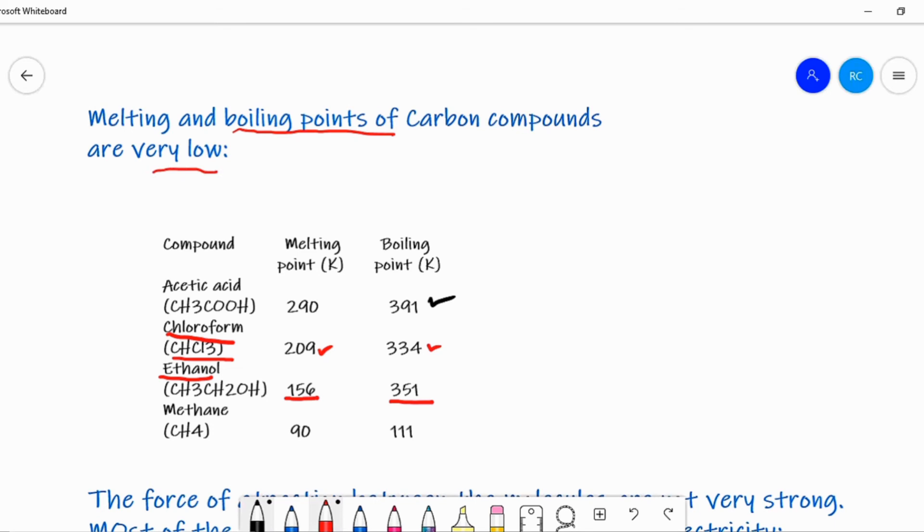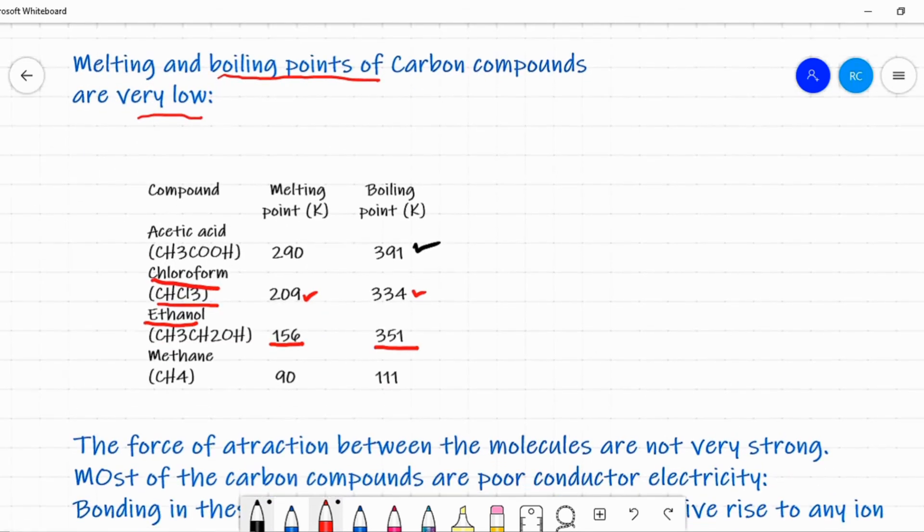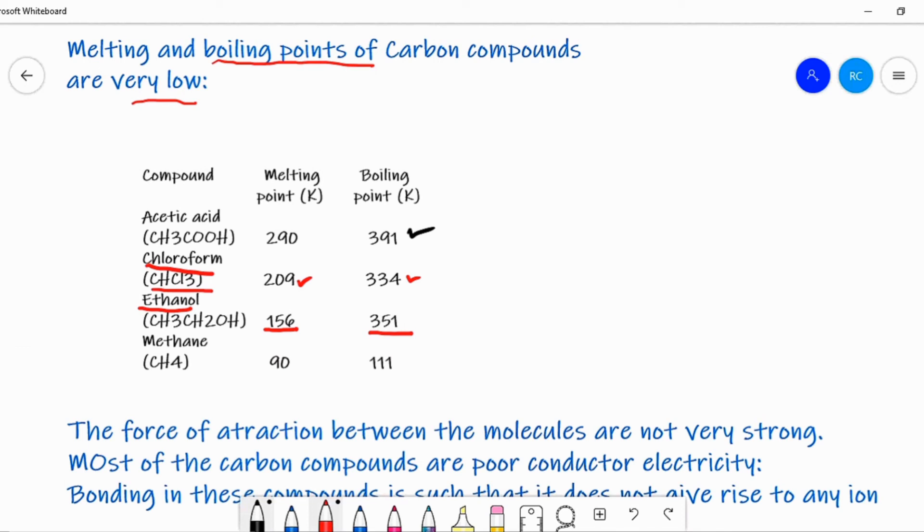Why is this like that? The reason is that the force of attraction between the molecules are not very strong. There exists a weak force of attraction between the molecules of this compound. That is why the melting and boiling points of carbon compounds are very low.